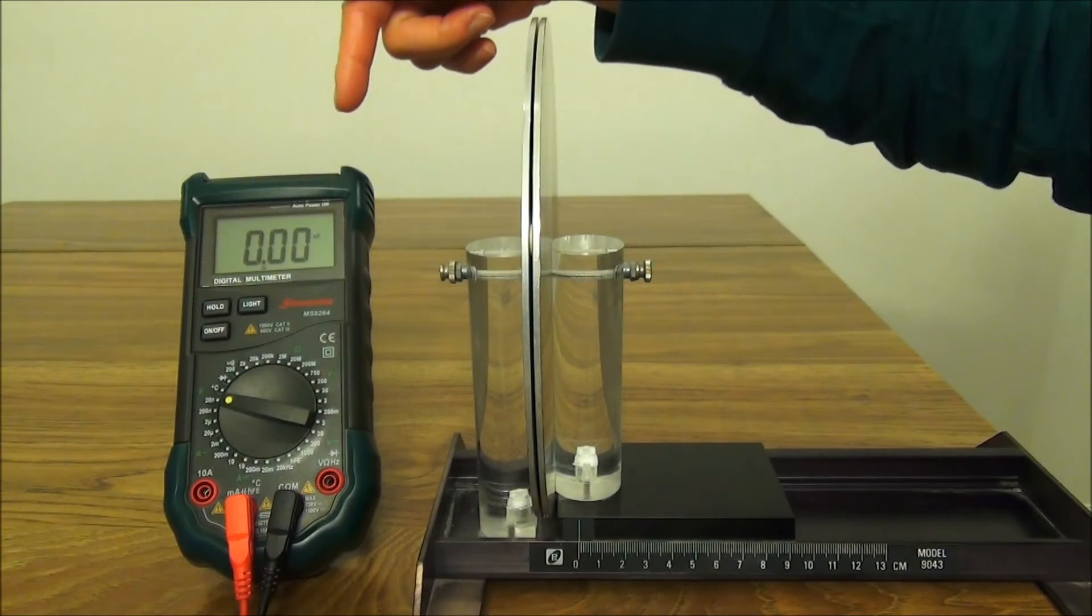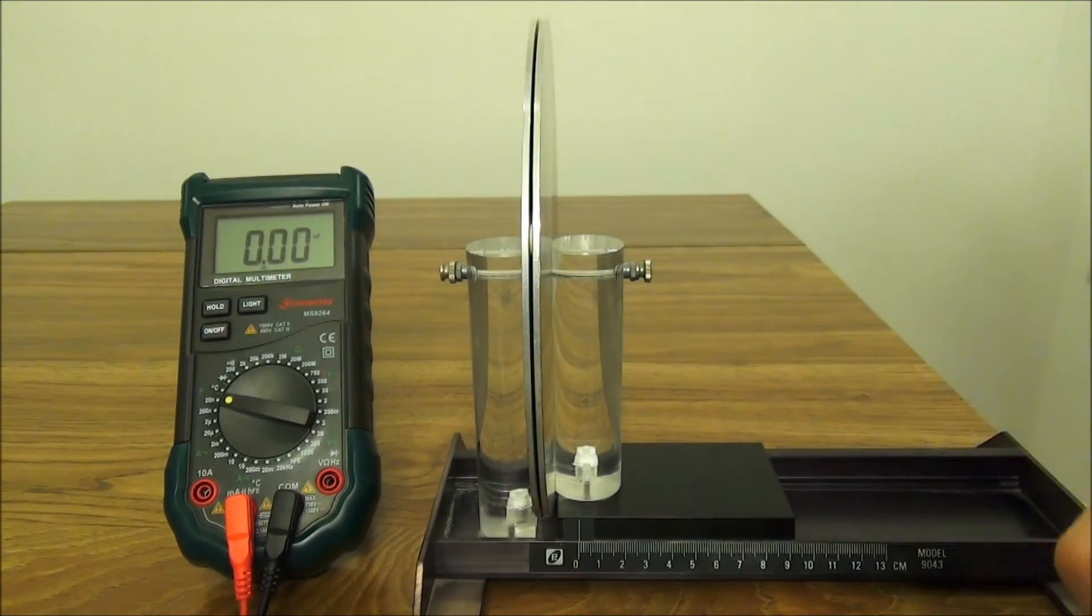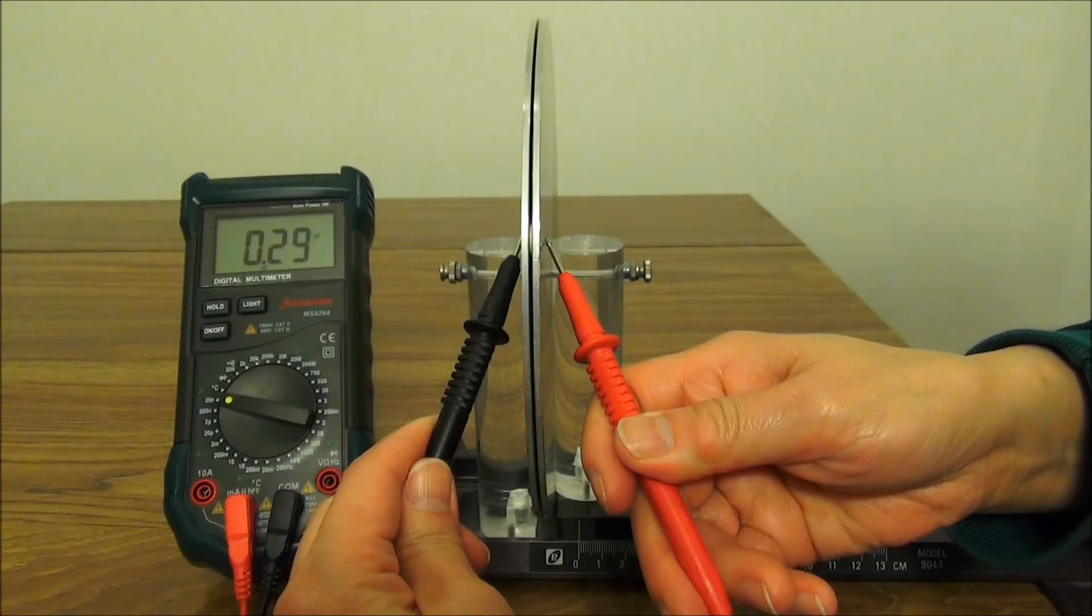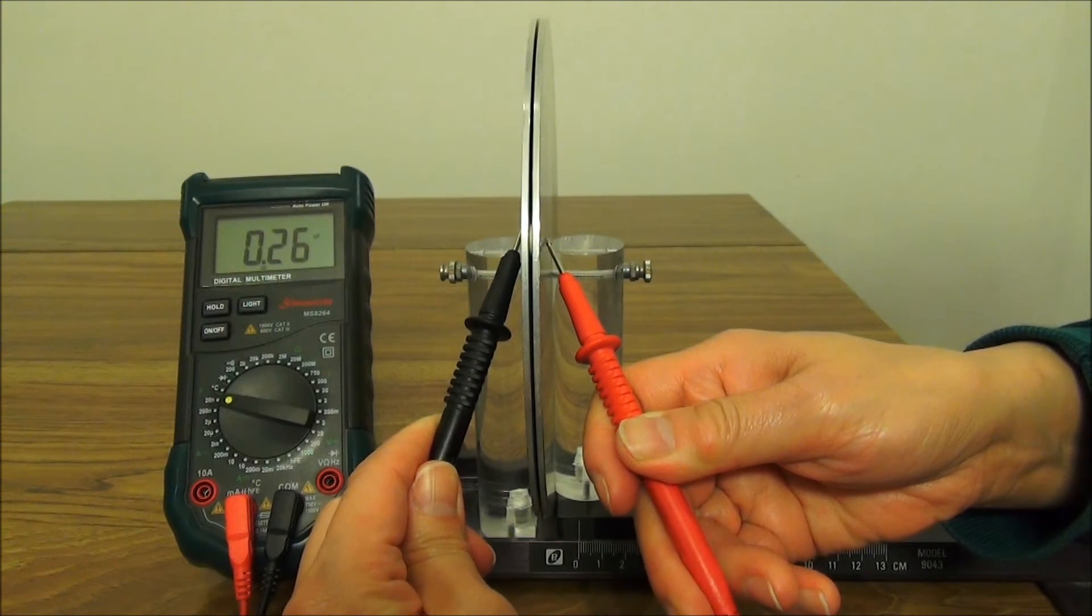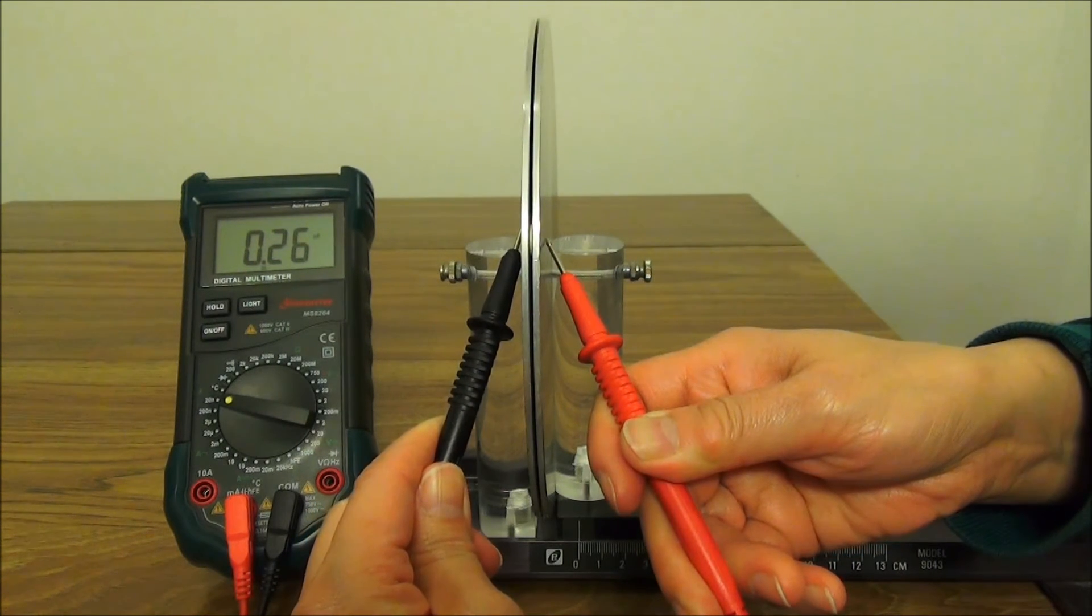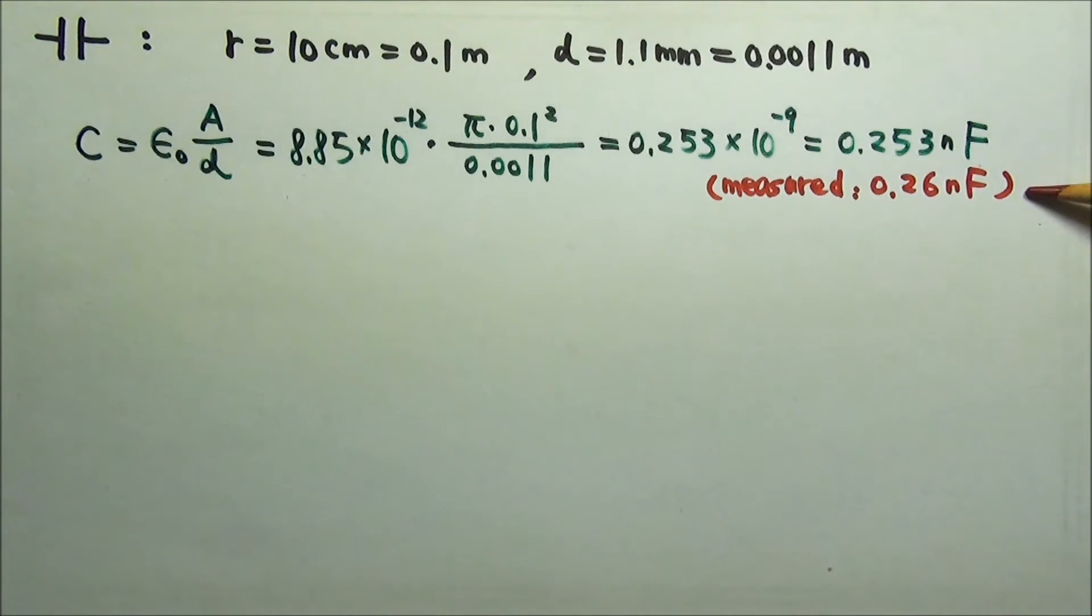I have a multimeter here that can measure capacitance. Let's see. It reads 0.26 nanofarad. The measured 0.26 nanofarad is very close to our calculated value. The difference probably mostly comes from the uncertainty on the plate separation and the tolerance of the multimeter.